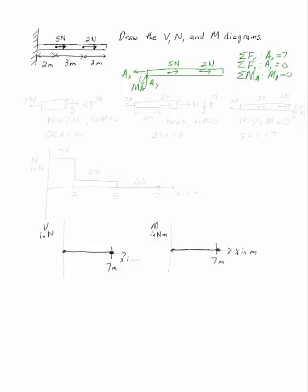Now, break the beam up into pieces. You have three different pieces. You'll have something that exists before you get to your 5 newton load at X equals 2. So at this point, N equals 7 newtons. V and M are equal to 0.